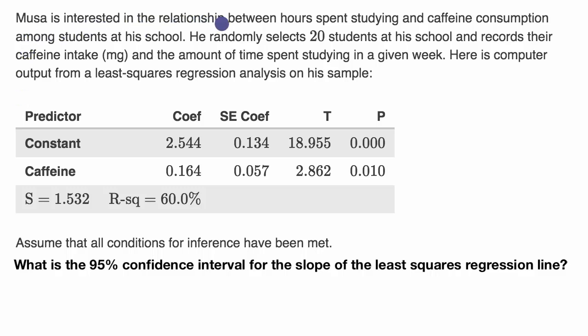Musa is interested in the relationship between hours spent studying and caffeine consumption among students at his school. He randomly selects 20 students at his school and records their caffeine intake in milligrams and the amount of time studying in a given week. Here is a computer output from a least squares regression analysis on his sample. Assume that all conditions for inference have been met. What is a 95% confidence interval for the slope of the least squares regression line?